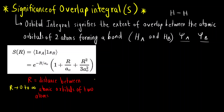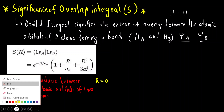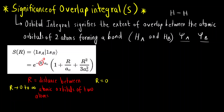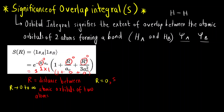Suppose if I put R equal to 0: e raised to 0 is 1, 1 plus R is 0, and R squared terms also become 0. So 1 plus 0 plus 0 equals 1, and 1 into 1 gives S equal to 1. So the maximum value of the overlap integral S comes out to be 1, which means orbital overlap is present — that is, a bond is being formed.